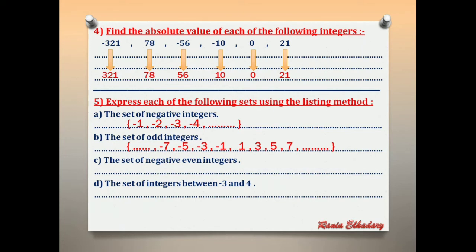Letter C: the set of negative even integers. Even integers are 0, 2, 4, 6, ... and negative 2, negative 4, ... We want only negatives: {negative 2, negative 4, negative 6, negative 8, ...}.